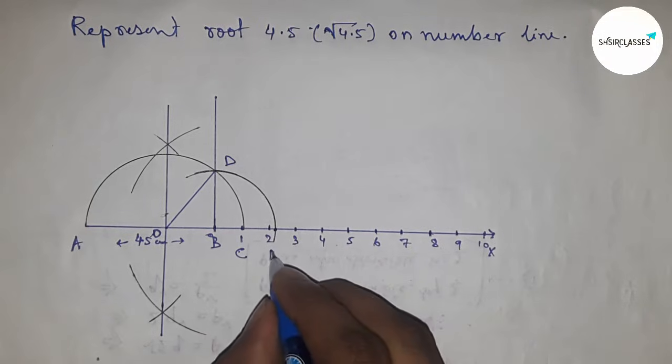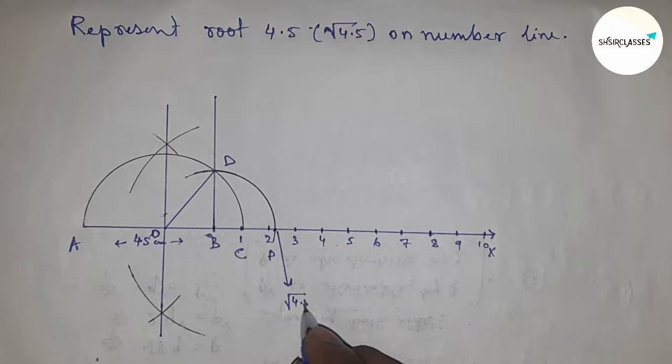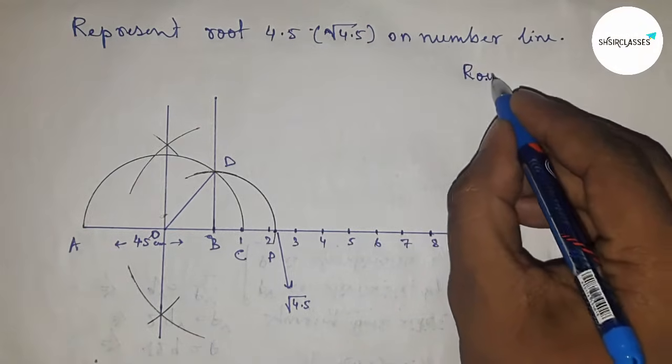This is point P, and it is the representation of root 4.5. So this is root 4.5.